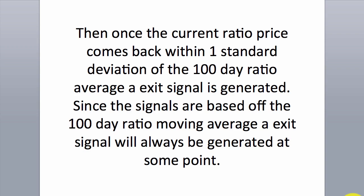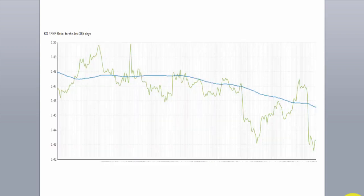Once the current ratio price comes back within one standard deviation of the 100-day ratio average, an exit signal is generated. Since the signals are based off the 100-day ratio moving average, an exit signal will always be generated at some point.